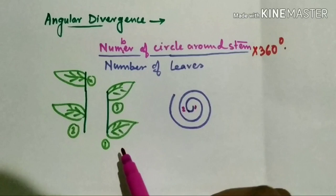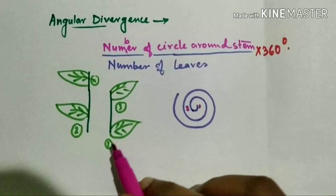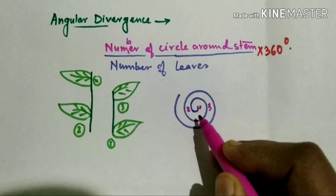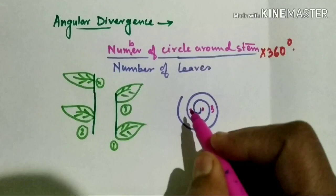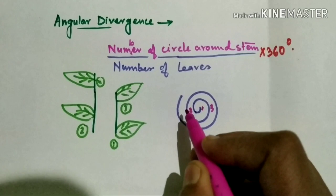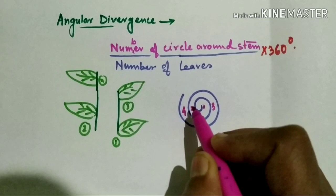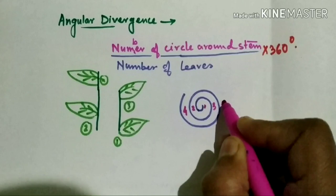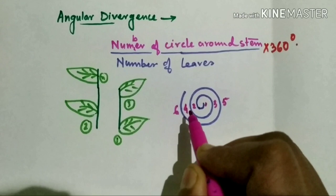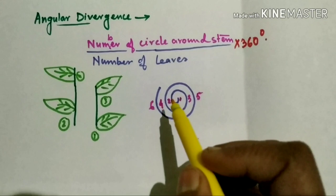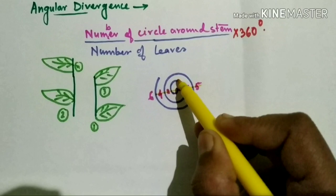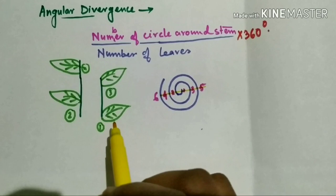If we draw a spiral ring to show the arrangement of leaves, the first leaf is here, the second leaf is opposite to it here. Similarly, the third leaf is present after the first leaf, and the fourth leaf is present after the second leaf. Then the fifth leaf is present in this area, and the sixth leaf is present at this point, producing a 180 degree angle.